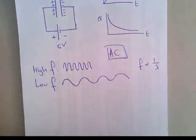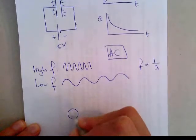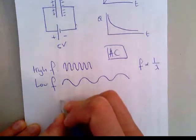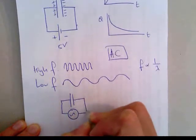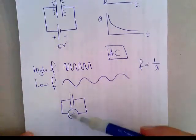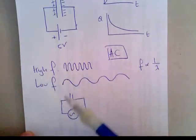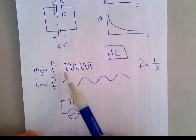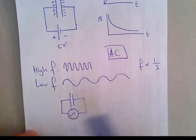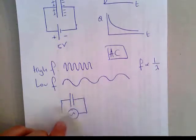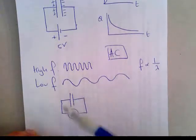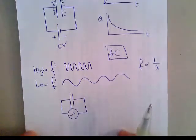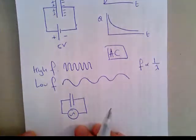the capacitor doesn't have time to fully charge up and stop conducting. With a high frequency AC signal over a capacitor, it's as though there's no capacitor there at all, because the charge changes direction so quickly that the capacitor doesn't have time to react. So it continues to allow current to flow between its terminals — it essentially acts like a short circuit.